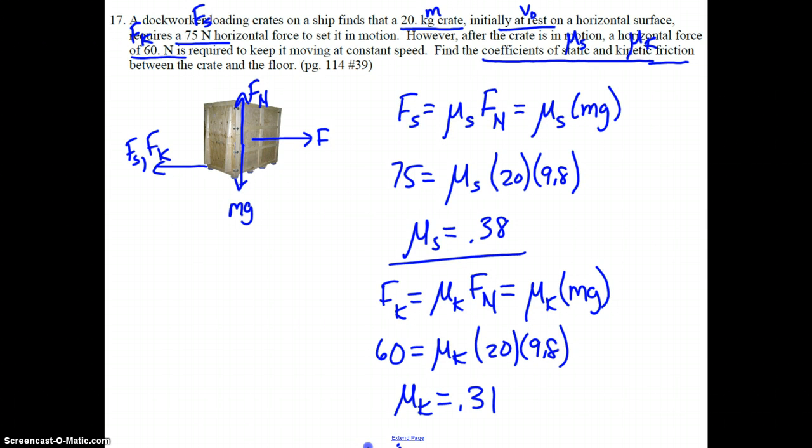So our coefficient of static friction is 0.38 and our coefficient of kinetic friction is 0.31. Our answer makes sense because our kinetic coefficient is always going to be less than our static coefficient. Again, note any questions that you have on this or the previous problem, and make sure you ask about those in class tomorrow when you're given the chance to do so. More on Newton's laws and incorporating friction in problems that we'll work on tomorrow.